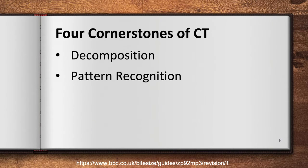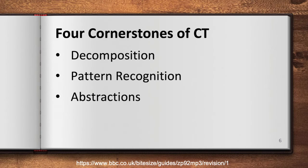Another cornerstone of computational thinking is abstraction, which involves filtering out — essentially ignoring — the characteristics that we don't need in order to concentrate on those that we do. Most people would agree that general characteristics of cakes are that they are made up of ingredients at specific amounts and need to be baked. These are abstractions. We don't get into the finer details like what ingredients are needed, what specific measurements, or at what temperature or how long to bake.